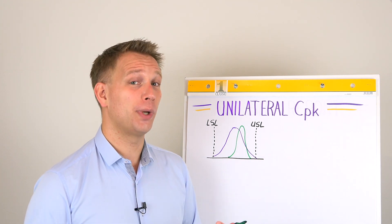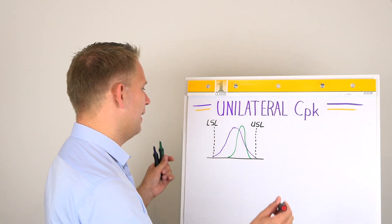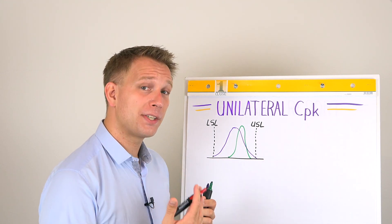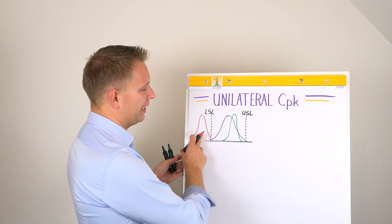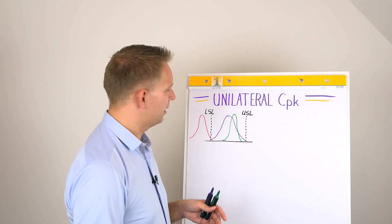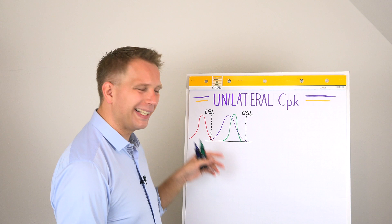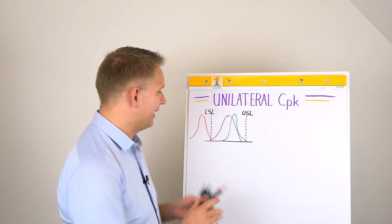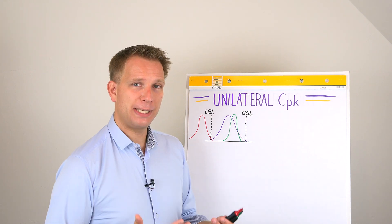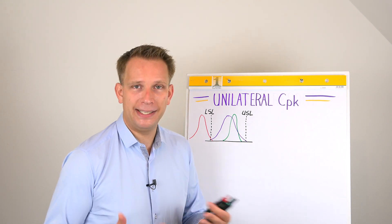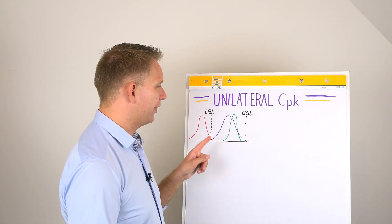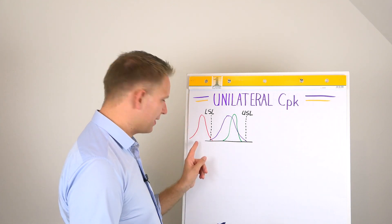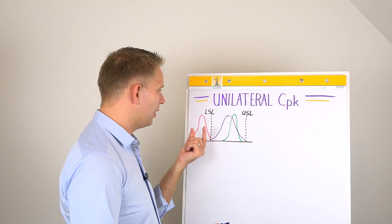Another example — this shouldn't happen too much in practice but it's good to know. We have a totally different type of process that is maybe quite good in its basis but not performing. The spread is even less than the basic purple one, but it's completely or almost completely outside of our limits. This red process we'd call quite capable — it would fit in about twice, so CP is about 2 — but it is completely off-center, so in practice it never makes good products because it's stable but stable under our specification limit.